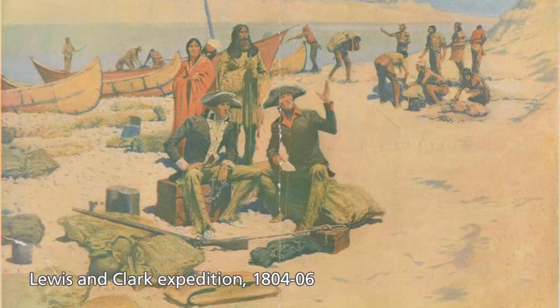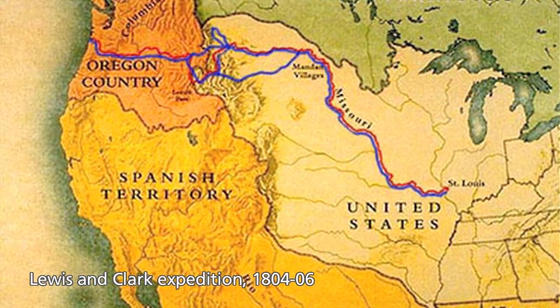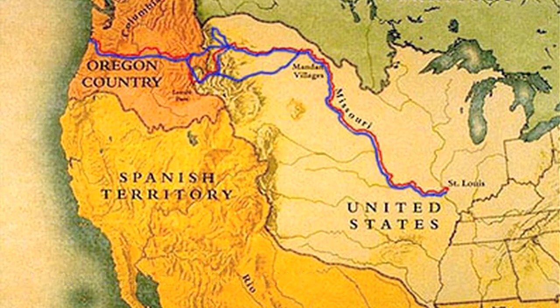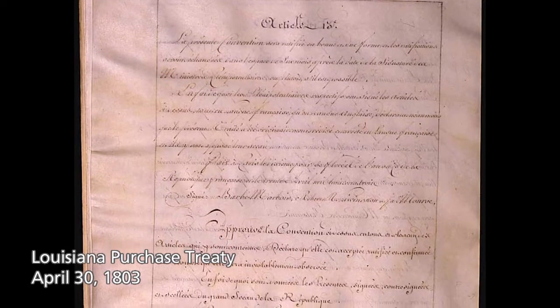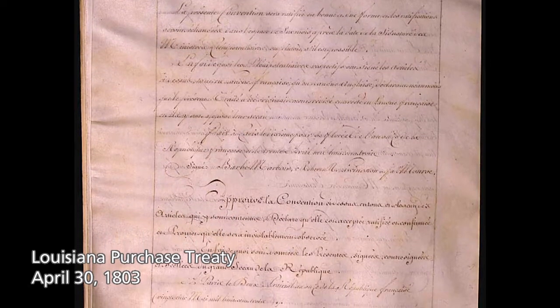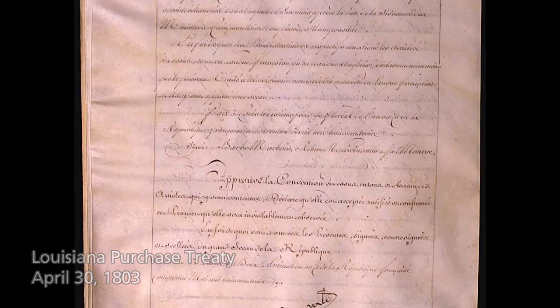After 1800, interactions between Indians and non-Indians — Europeans and their descendants — change in the West, primarily because the United States arrives. The Lewis and Clark expedition of 1804 and 1806 signals the first tentative feelers of American expansion into the area west of the Mississippi, which was called the Louisiana Territory, acquired by the United States in 1803 through the Louisiana Purchase — generally regarded as one of the greatest real estate deals in history.